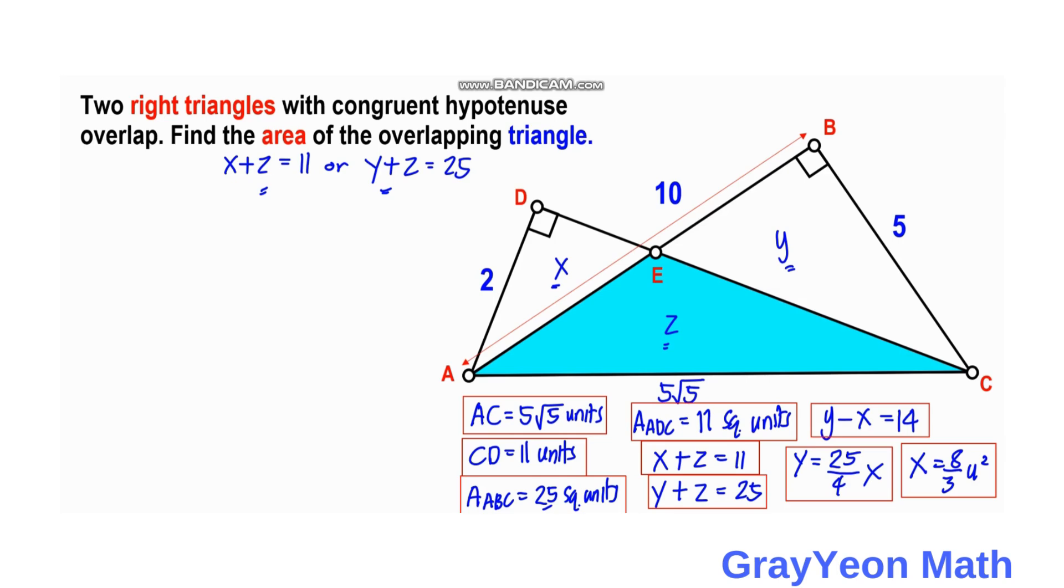Since we have X, 8 over 3 plus Z equals 11, so Z equals 11 minus 8 over 3. Z equals, the LCD is 3, so 3 divided by 1 is 3 times 11, which is 33 minus 8. 33 minus 8 equals 25, so the area of Z is 25 over 3 square units. That is our answer.